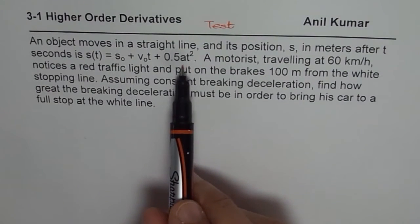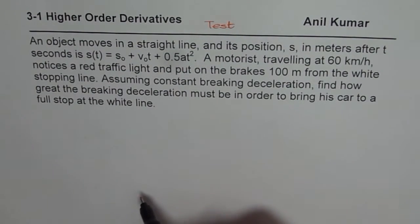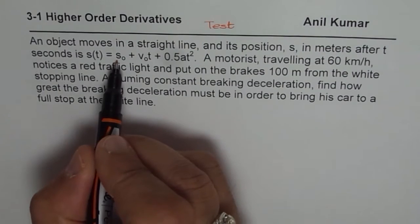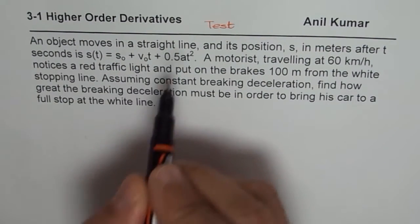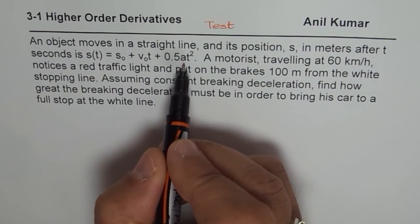Now let me explain this equation here because I didn't have enough space to explain. Where s₀ is initial position, v₀ is initial velocity and a is acceleration.